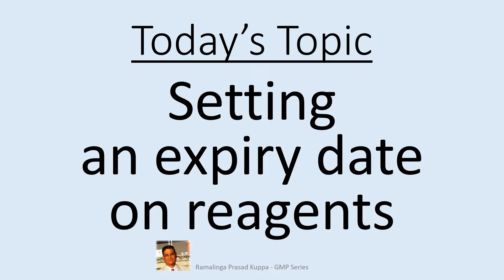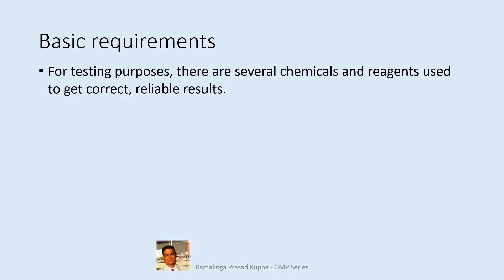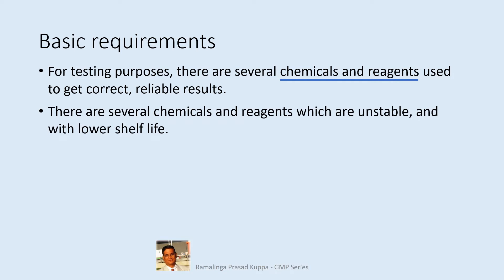This is an entirely different subject compared with the stability studies conducted for establishing the shelf life or expiry of APIs and drug products. For testing purposes, there are several chemicals and reagents used to get correct and reliable results. For each step of chemical analysis, a specific reagent is required, and there may be more than one reagent or chemical used for a particular analysis. There are several chemicals and reagents which are unstable and with lower shelf life. The stability or usability of reagents is not the same always.